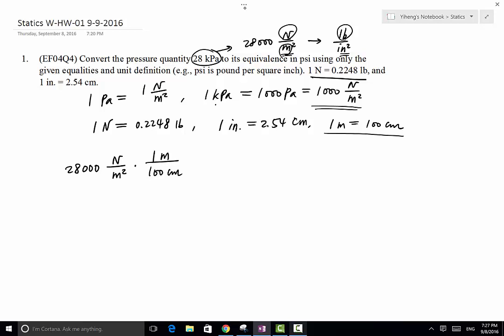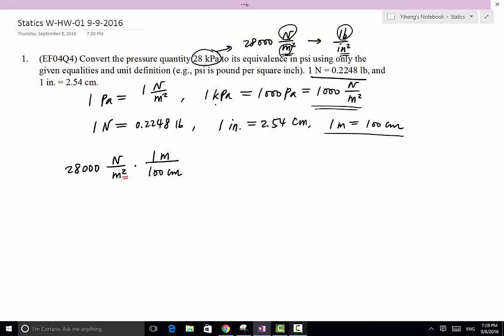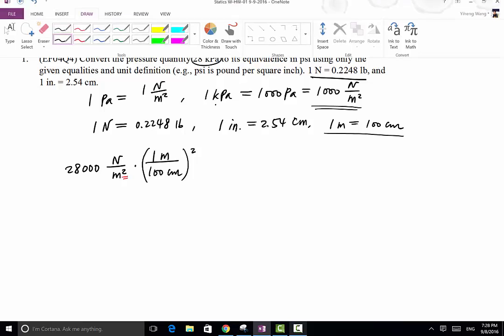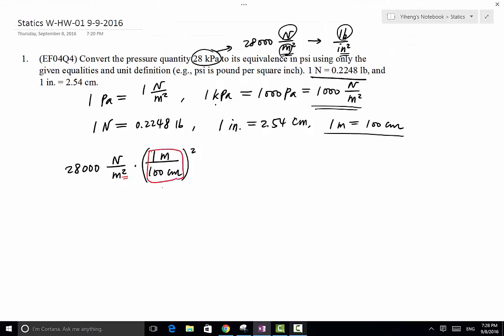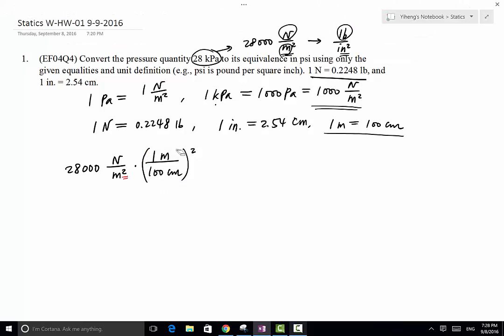But of course, right now, here we have meter raised to the second power. Therefore, we need to raise this entire conversion coefficient to the second power. We cannot only raise the numerator to the second power or the denominator to the second power. The reason is this whole thing right here is equivalent to a pure number 1. Therefore, we can raise the pure number 1 to any power and it is still going to be 1.